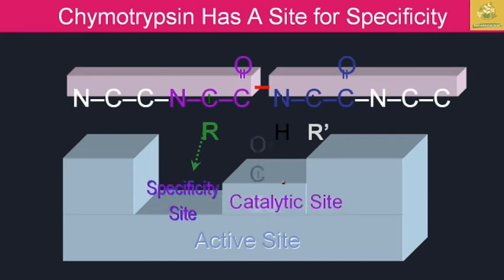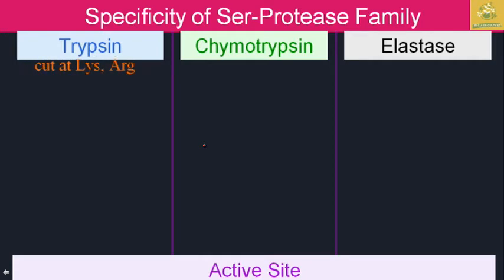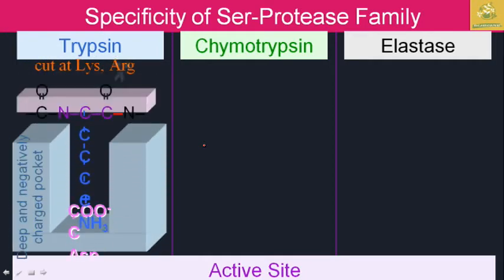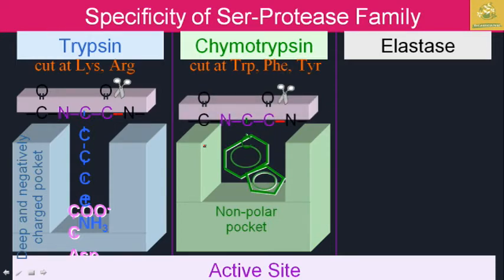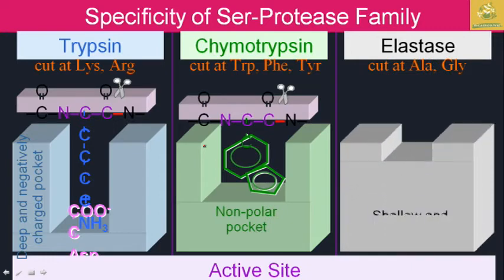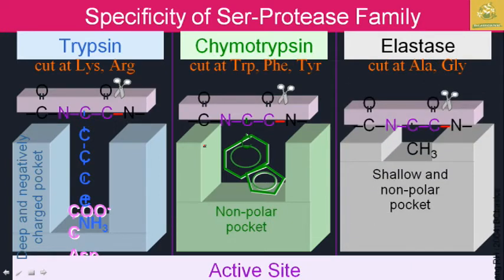Now we look at a specific example: chymotrypsin has a site for specificity, an active site and a catalytic site. Looking at the specificity of the serine protease family — in trypsin it cuts at lysine and arginine; in chymotrypsin it cuts at phenylalanine and tryptophan; elastase cuts at alanine and glycine where there is a shallow non-polar pocket; and trypsin has a deep and positively charged pocket. Based on substrate structure they each form their own products.